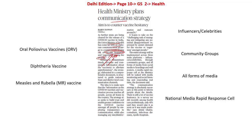Why is there vaccine hesitancy? First, because of complacency — people might feel they are strong and the disease might not impact them, making them resistant to taking the vaccine. Second, inconvenience in accessing vaccines — there might be people who want to take it but have no accessibility. Third, lack of confidence — they are not sure if the vaccine will cure them or prevent future disease reoccurrence. There is also doubt about the efficacy of the vaccine and concern about side effects. As a result, people start doubting whether that particular vaccine should be taken.